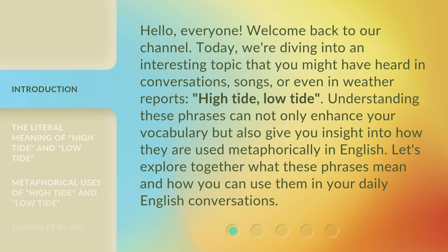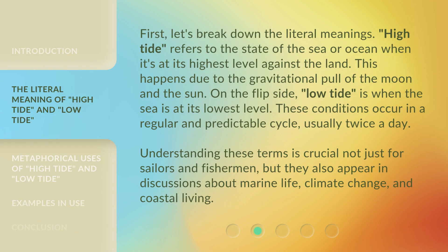First, let's break down the literal meanings. High tide refers to the state of the sea or ocean when it's at its highest level against the land. This happens due to the gravitational pull of the moon and the sun. On the flip side, low tide is when the sea is at its lowest level. These conditions occur in a regular and predictable cycle, usually twice a day. Understanding these terms is crucial not just for sailors and fishermen, but they also appear in discussions about marine life, climate change, and coastal living.